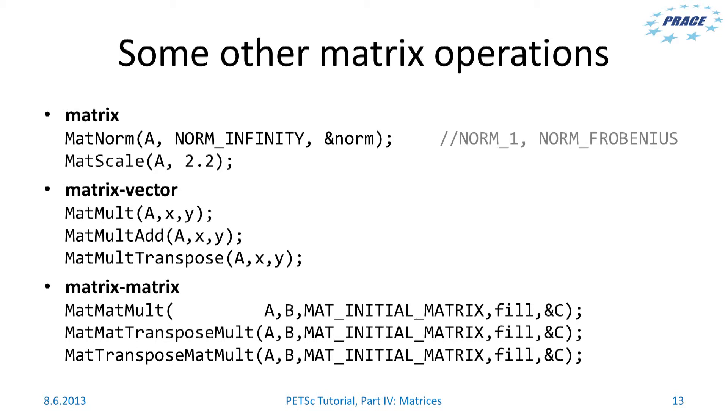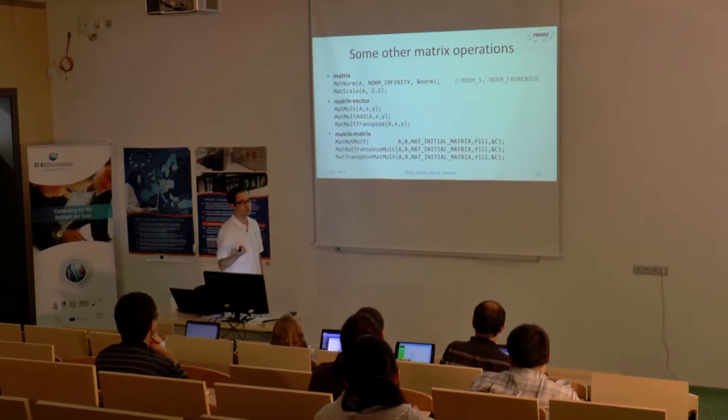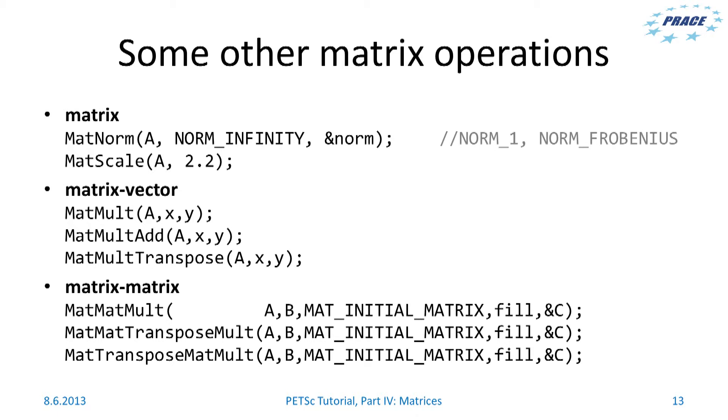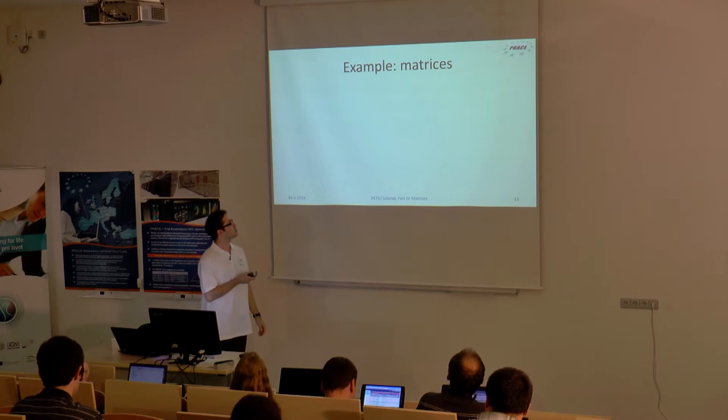And here you can see some examples of basic matrix functions. For example, involving single matrix to compute the norm of the matrix, you can call MatNorm. Computations involving matrix and vector are mainly matrix vector multiply, and computations involving matrices are matrix matrix multiply. Depending on the position of the word transpose, you use A in a transposed form or B in a transposed form. Okay, and it's now time to see it in action, so wait a moment.